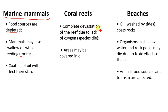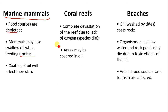For coral reefs, oil spill can cause complete devastation due to lack of oxygen. Coral reefs are formed in shallow, clear water areas that require sufficient sunlight and oxygen. An oil spill reduces the oxygen content, meaning most marine organisms cannot survive and species die. The area may be covered in oil.